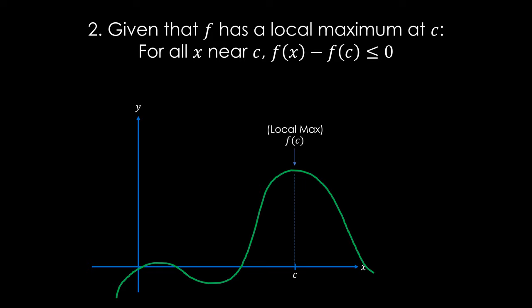Our second step is to note that because we have a local maximum at c, for all the x values that approach c, f of x minus f of c will be smaller than or equal to 0. And intuitively this makes sense. We have a local maximum at c, so there is no y value that could be greater than the y value at c.